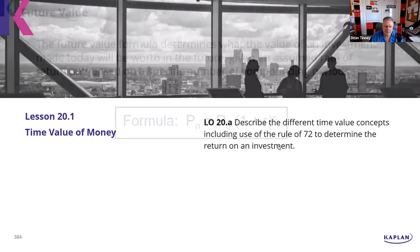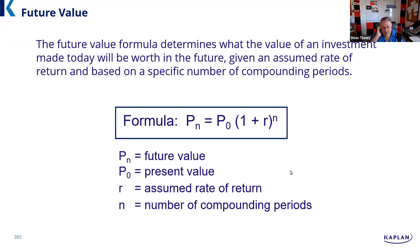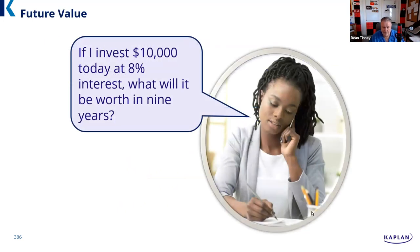So again, it's mainly: can you recognize the inputs and the outputs? The future value formula determines the value of an investment made today — what it'll be worth in the future, given an assumed rate of return and based on a specified number of compounding periods. It's mainly: do you understand the inputs and when you would use the math? Not, can you actually do the math? Can you pick this out of a lineup?